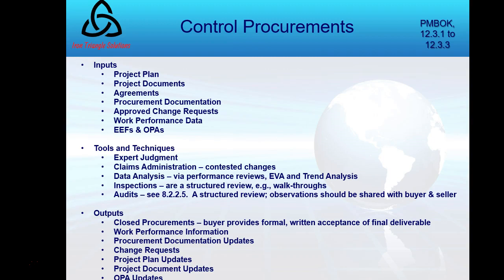Our outputs: first is closed procurements. This is when the buyer, usually through its authorized administrator like the procurement manager, provides the seller with formal written notice that the contract has been completed. As the buyer, at the end of the project, you want formal written acceptance of the final deliverable — that it meets specifications and scope, which is reflected in the statement of work. Requirements documentation usually defines the contract and timing.